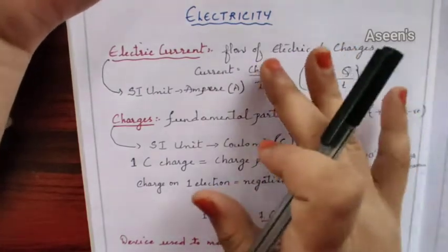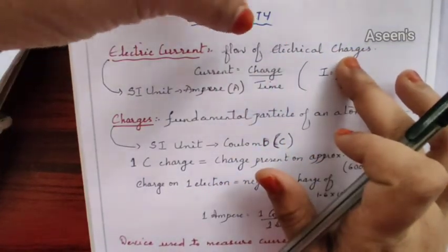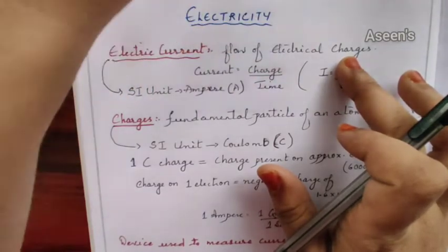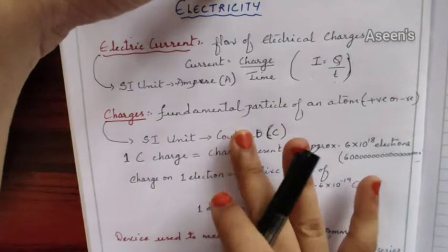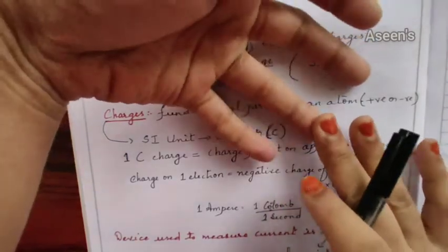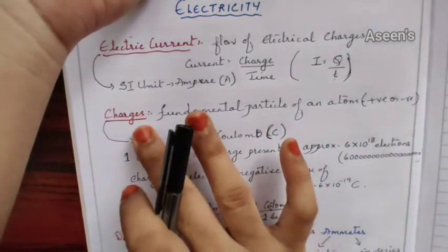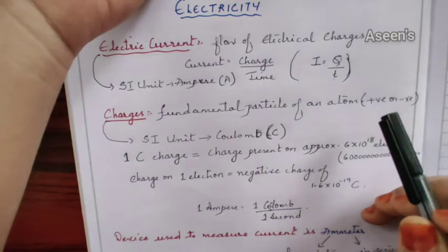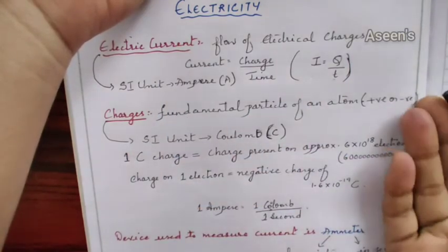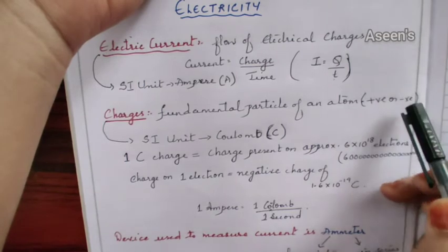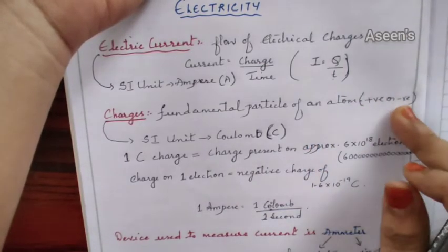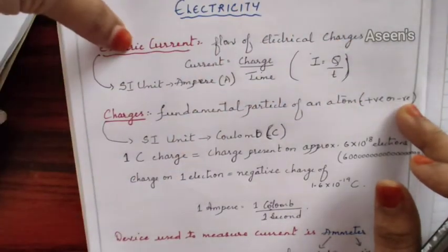Now let's understand what electrical charges are. Electric current is the flow of electrical charges, so we need to understand what these charges are. Charge is nothing but fundamental particles of an atom. From your previous classes you know there are electrons, protons, and neutrons. Charges are the positive or negative ones - protons or electrons. The flow of protons (positive) or electrons (negative) is electric current.